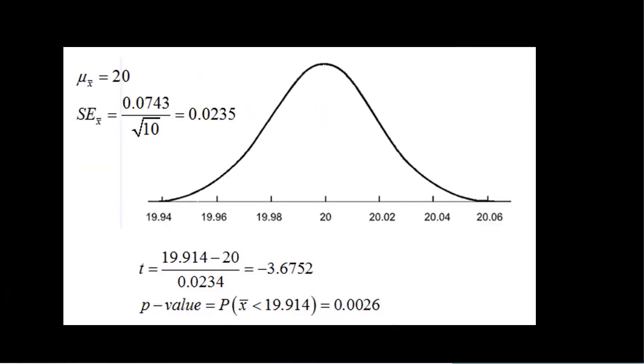So here was my example. The mean of all of our means should be 20. Again, we're assuming that the null is true, so I put 20 smack dab in the middle. Then I have my standard error. Again, I wish I could use standard deviation, but since I don't know sigma, I'm going to replace it with S, the standard deviation of my sample, 0.0743, which, remember, I got from my calculator, divide it by the square root of 10, and I get the standard error of my sampling distribution.